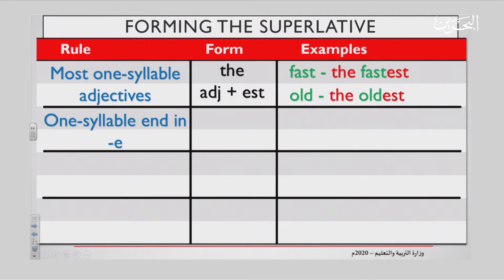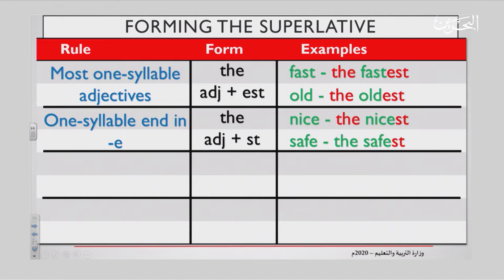Now, one-syllable adjectives that end in E — you add the adjective and this time just ST. Like nice — you say the nicest. Nice has an E at the end, that is why you do not add another E, you just add ST. Safe ends in E, you say the safest.